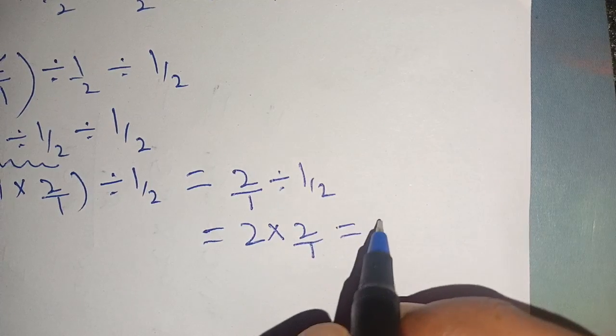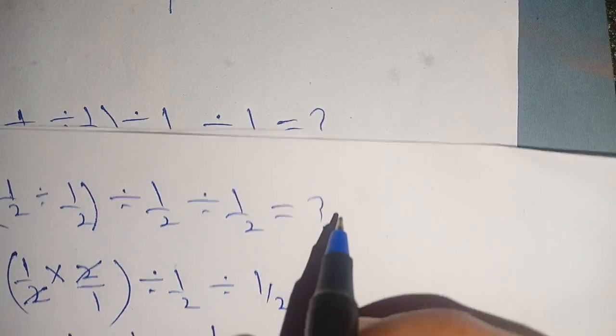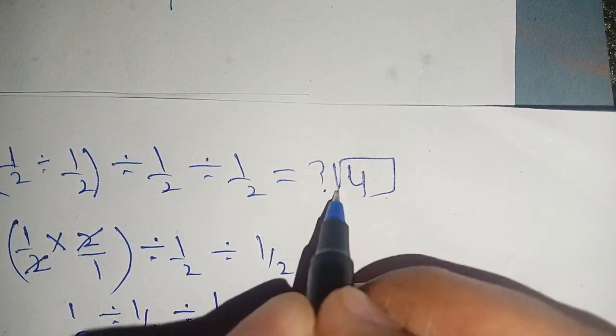Now it is equal to 2 times 2, it becomes 4. Thus our resultant is equal to 4, which is our required value.